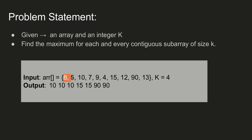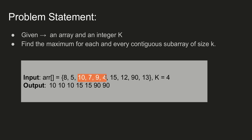For example, if we have this array and k is given to be 4, then in the first subarray the maximum is 10, in the next subarray the maximum is 10, in the third subarray the maximum is again 10, and so on.